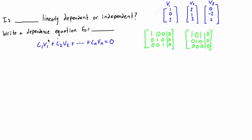From the last video, we talked about linear dependence. If you have a set of linearly dependent vectors, there's going to be an expression c1v1 + c2v2 + ... + cnvn = 0, where the c's are scalars and the v's are vectors. If at least one scalar is not zero, the set is linearly dependent. If every scalar must be zero, the set is linearly independent.